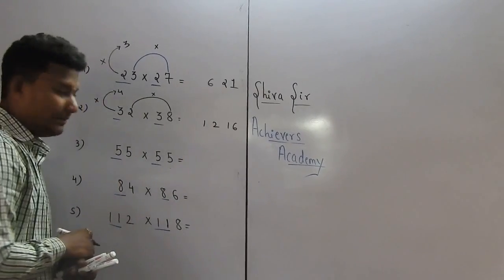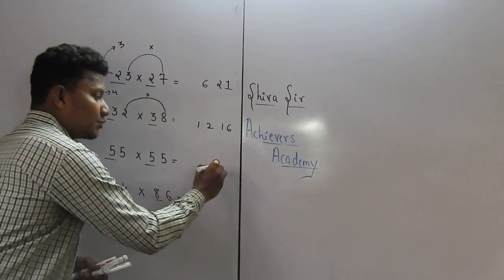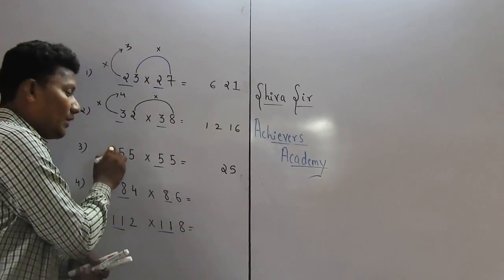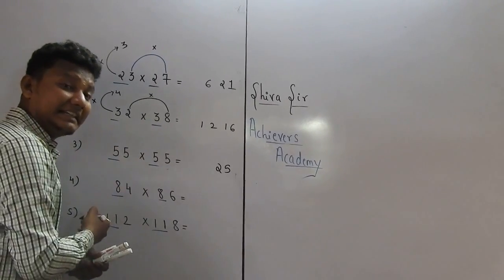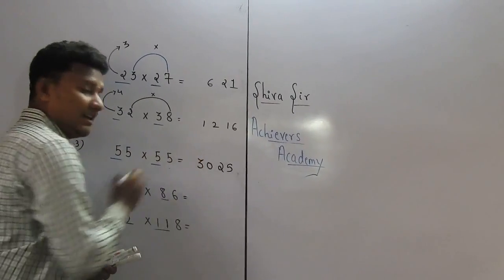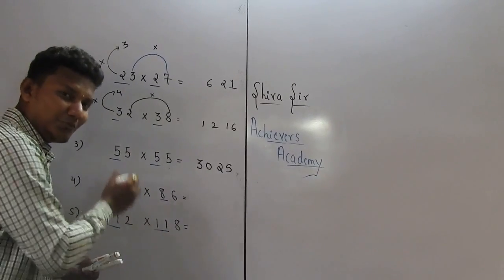Move on to the next example. 5 times 5 is 25. What is the next number after 5? It is 6. 5 times 6 is 30. So we got our answer: 55 times 55 equals 3025.